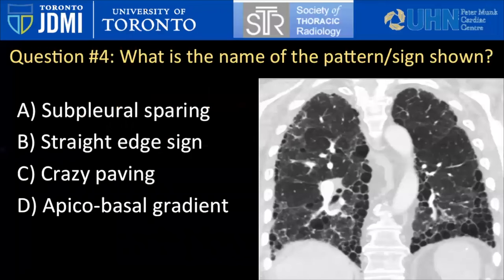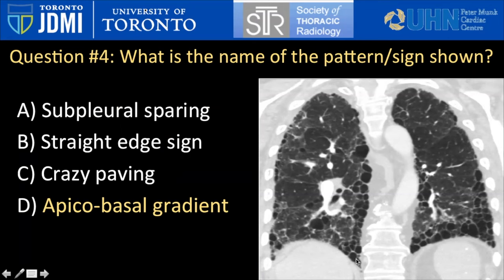Let's test your knowledge. What is the name of the pattern or sign demonstrated here? This is the apical-to-basal gradient distribution, with honeycomb cysts in a case of UIP. In contrast, paraseptal emphysema is upper lung zone predominant in single rows, whereas honeycomb cysts can be single rows as they develop and then progress to be stacked in multiple rows, predominantly in the lower lung zones because that is the distribution of fibrosis in UIP.